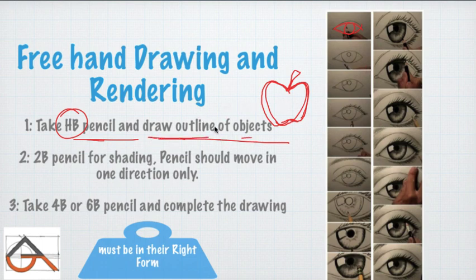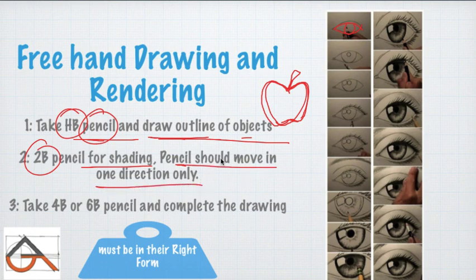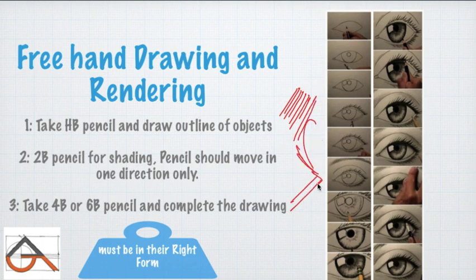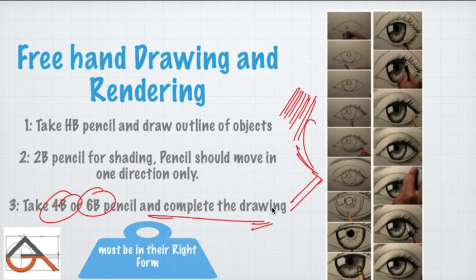After making the guidelines with the HB pencil, you can use a 2B pencil for shading. The pencil should move in one direction only — you should always hatch in the same direction, not back and forth randomly. This consistent direction is important for the hedging/hatching purposes.